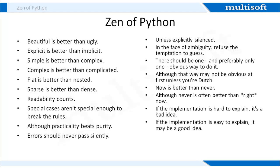If the implementation is easy to explain, it may be a good idea. Namespaces are one honking great idea — let's do more of those. All these explain the entire philosophy of Python in a gist.